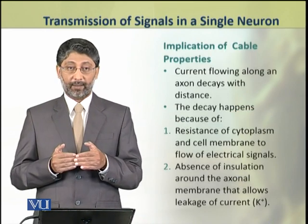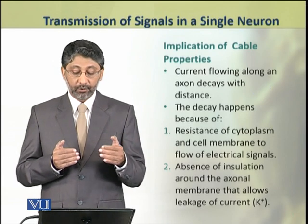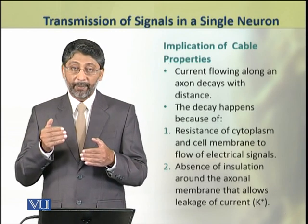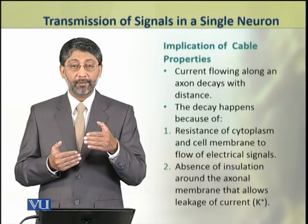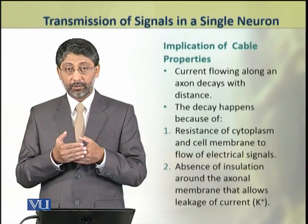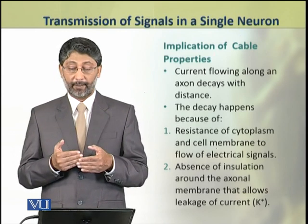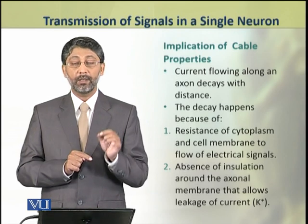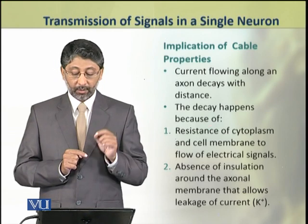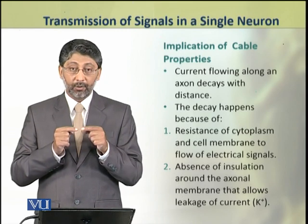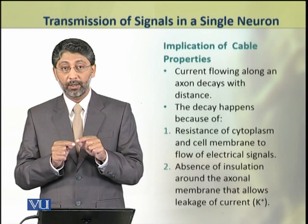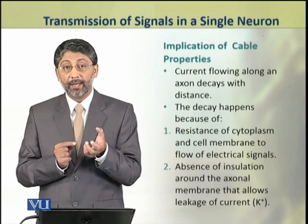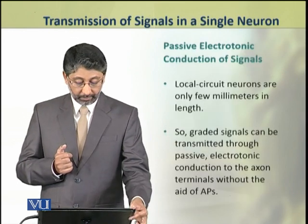Cable properties have some effects. Just as current can be lost in electric wires, similarly, due to the passive electrical properties of these neurons, current can also be lost or decay. This decay happens because of the resistance of the cytoplasm, which it presents to the flow of ionic current. The second reason is that the axonal membrane is not insulated — there is no myelin layer — and therefore ionic current flows out and is lost.